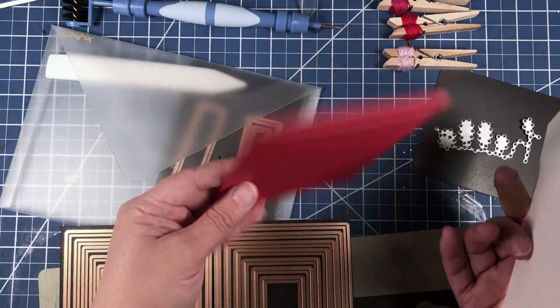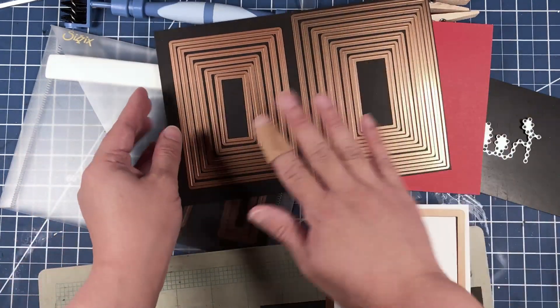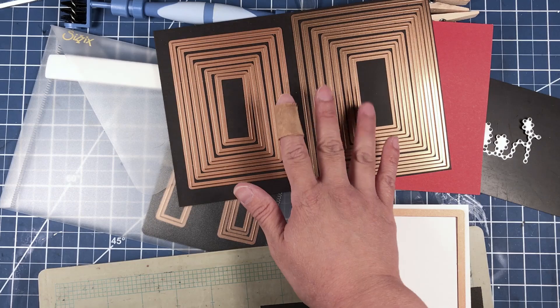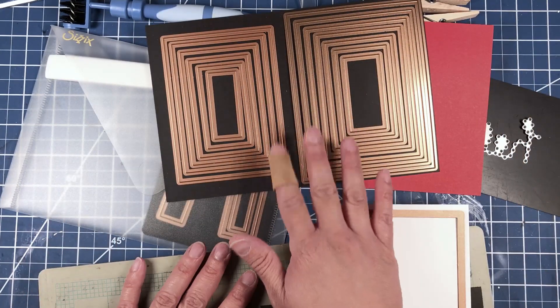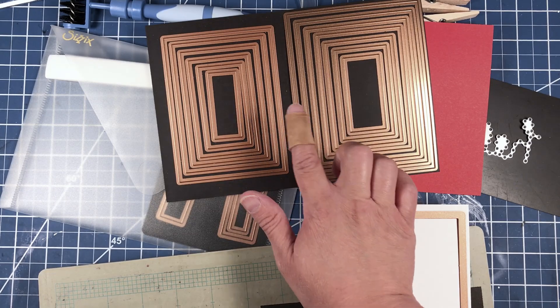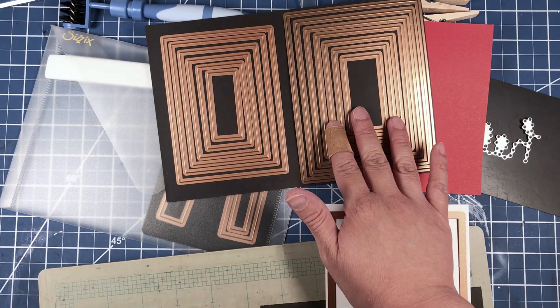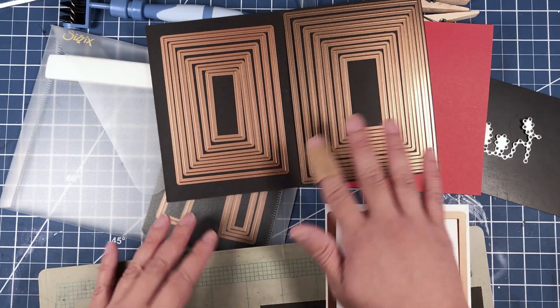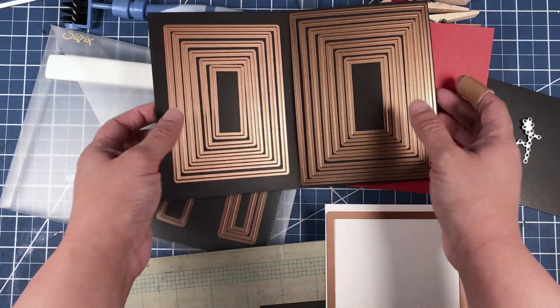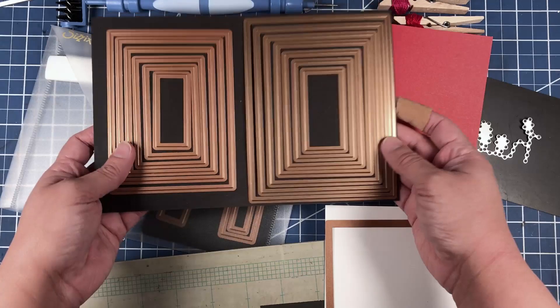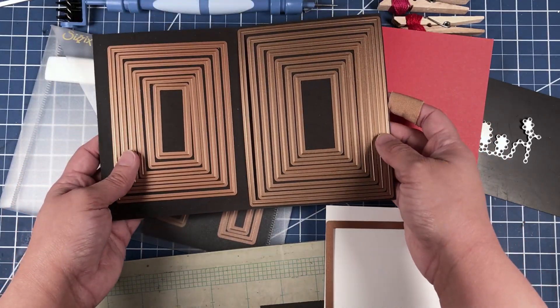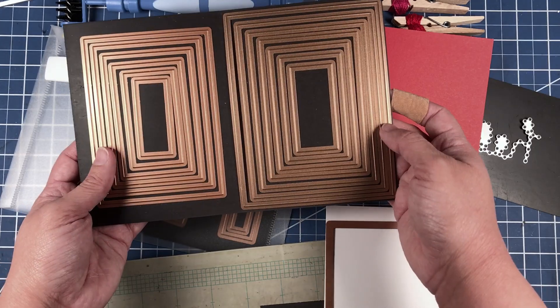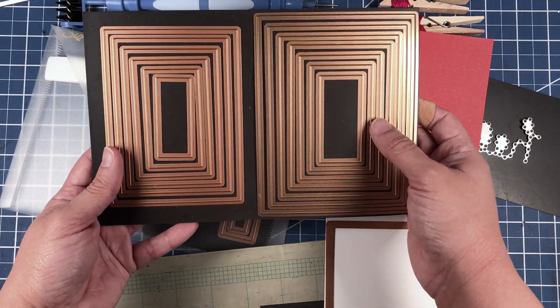If you're wondering where these die cuts come from, these are Spellbinders and they are the A2 matting basics which come in a size A and a size B. I like to keep them together because you never know which size you're gonna want to use, but both of these are good if you are creating an A2 size card.